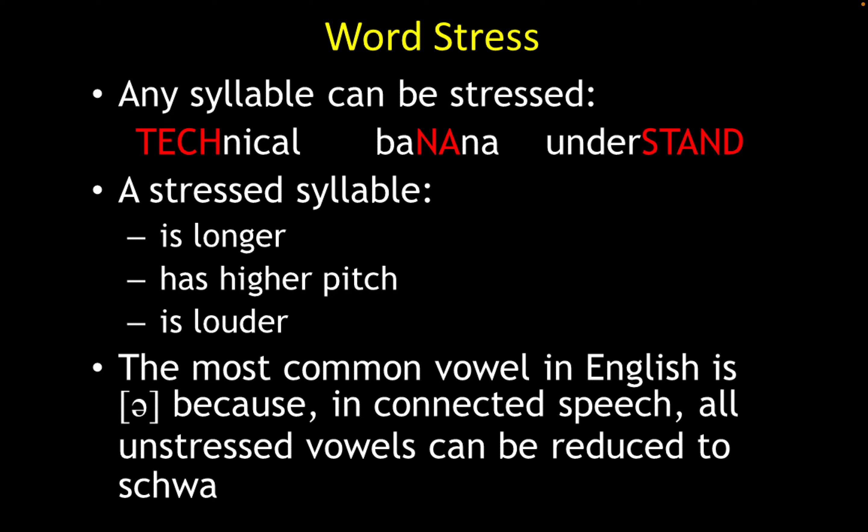The most common vowel in English is the schwa, which we already discussed when talking about vowels. One of the reasons is that in connected speech, all unstressed vowels can be reduced to schwa. When transcribing individual words, many unstressed vowels were already transcribed as schwa, but some were not. In connected speech, all vowels might be reduced to schwa — that's why schwa is the most frequent vowel in English.